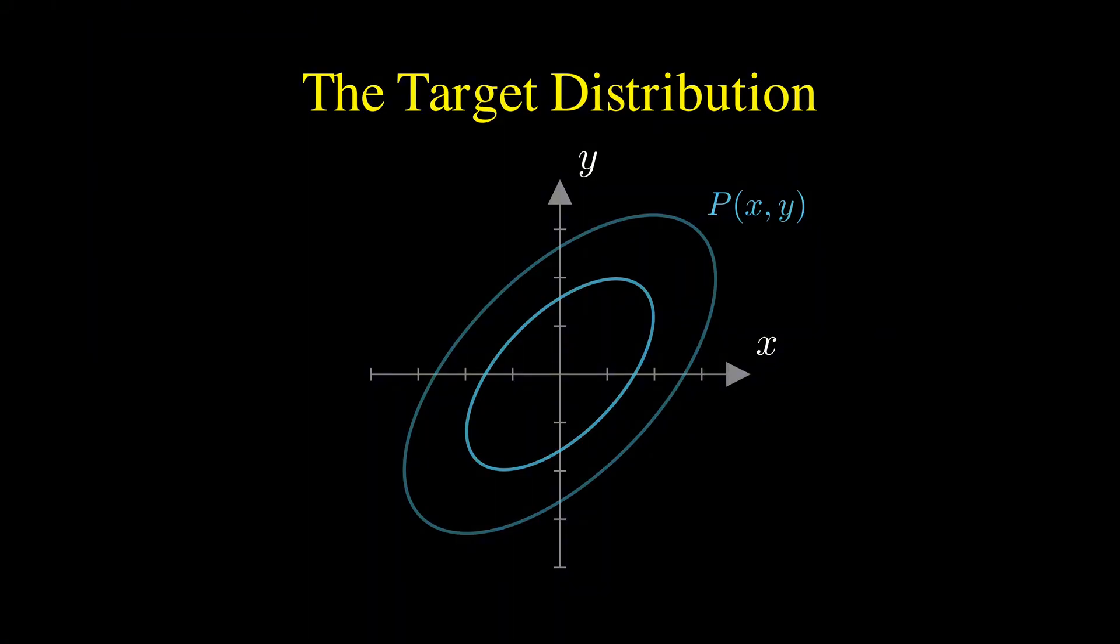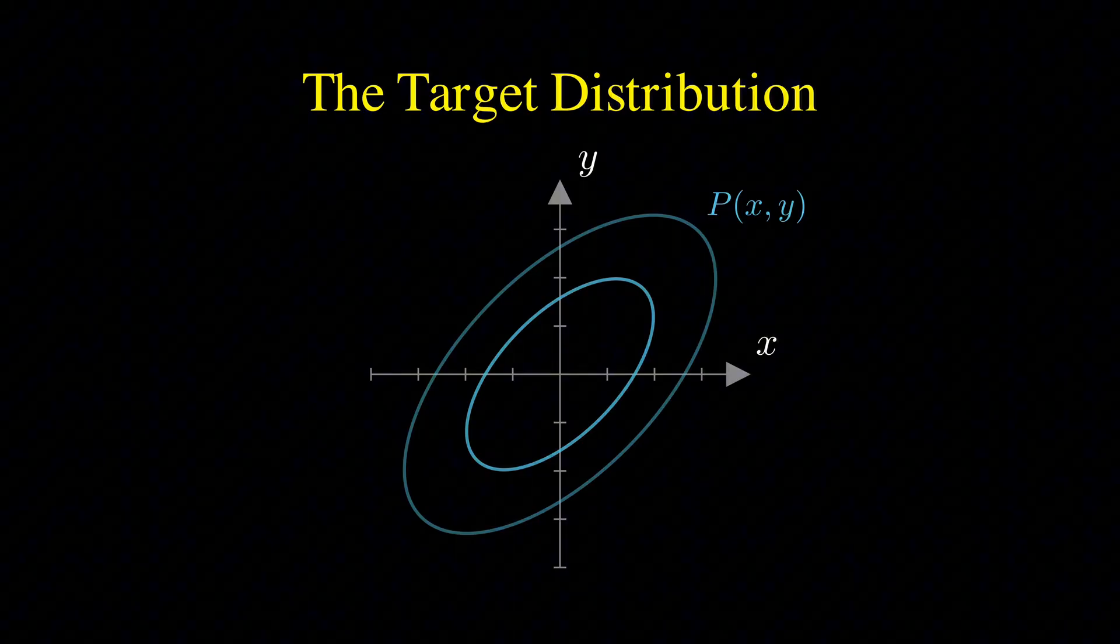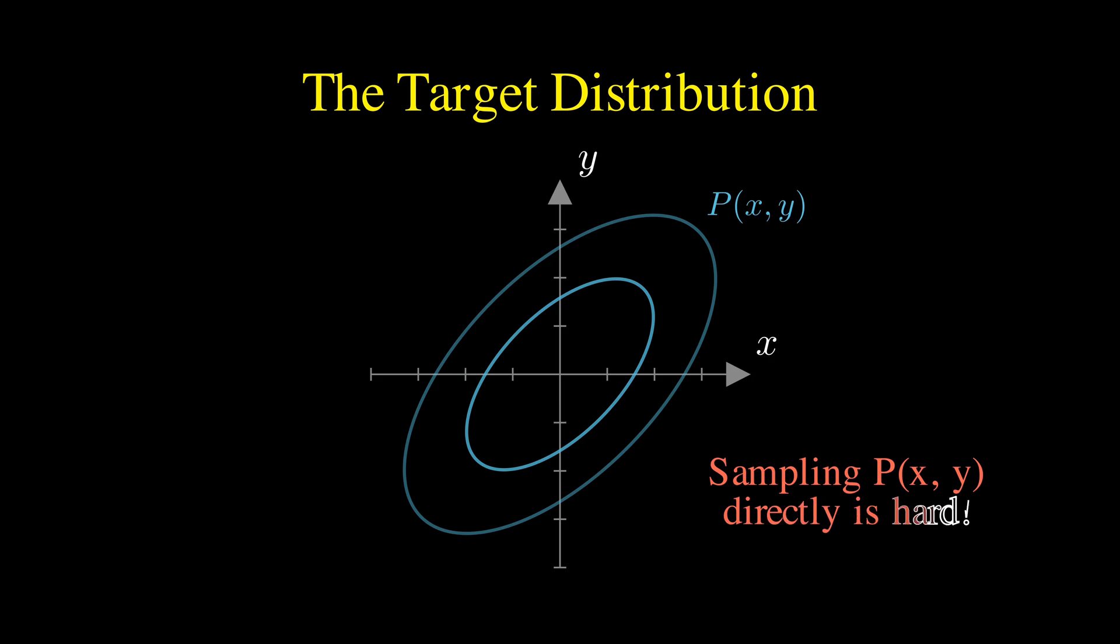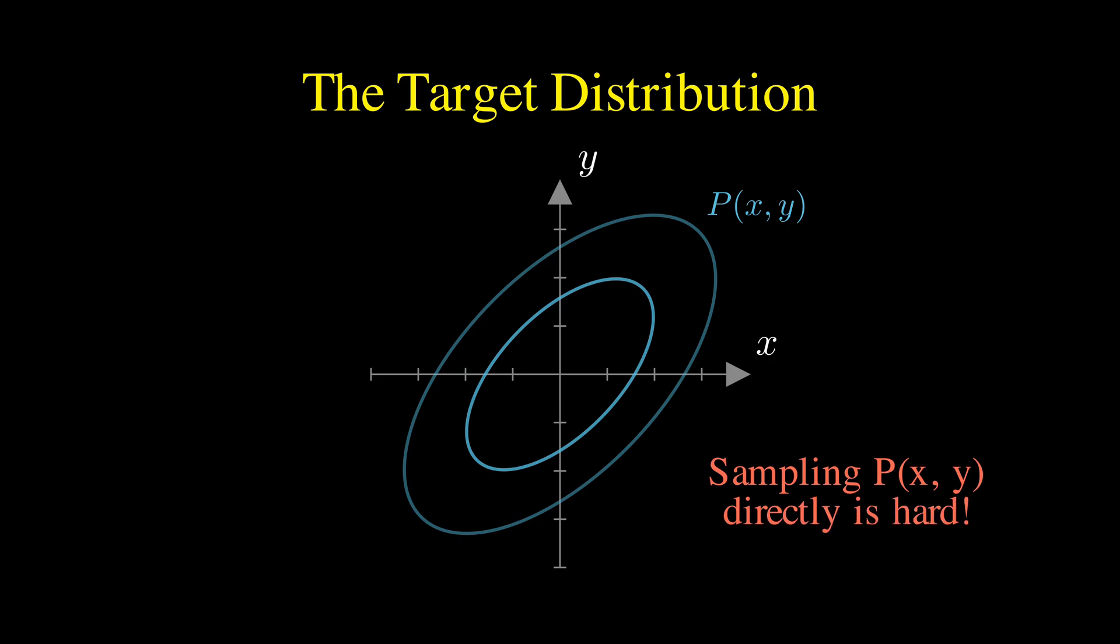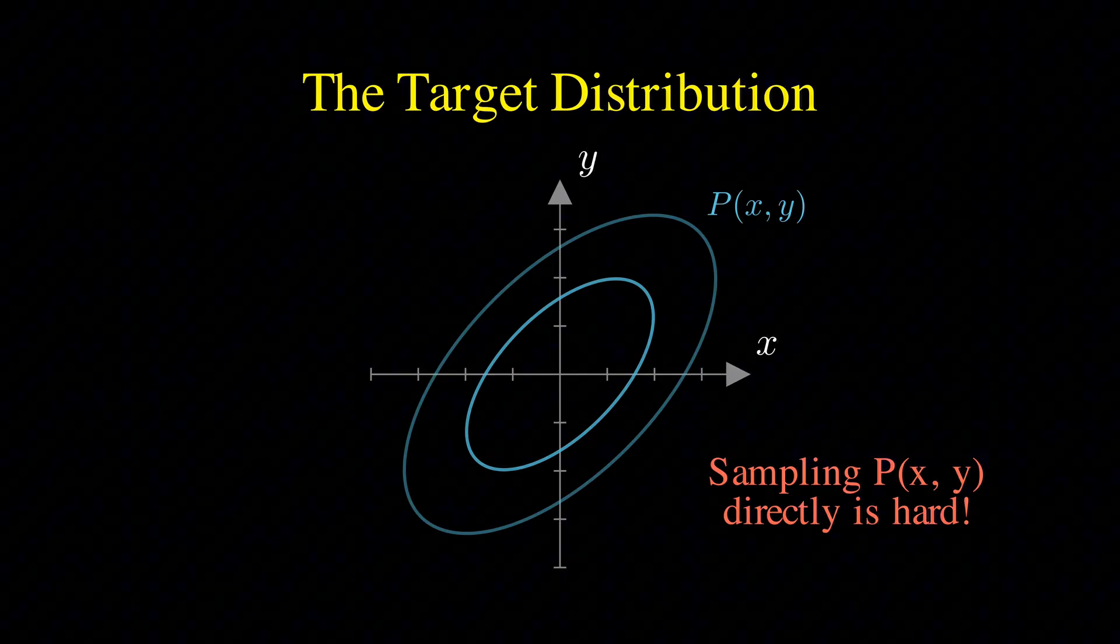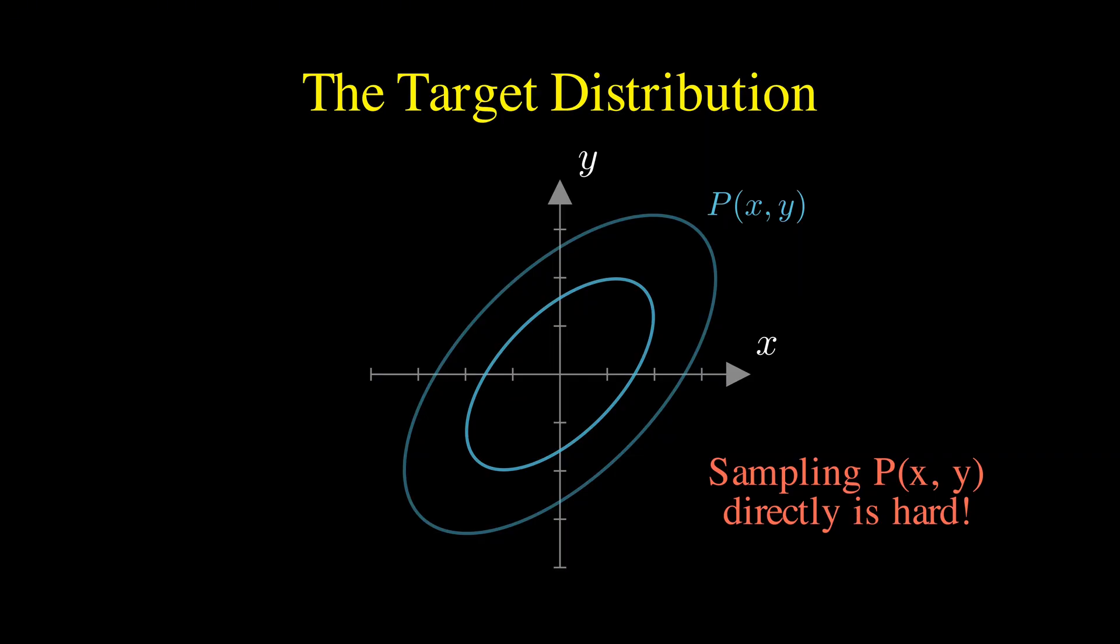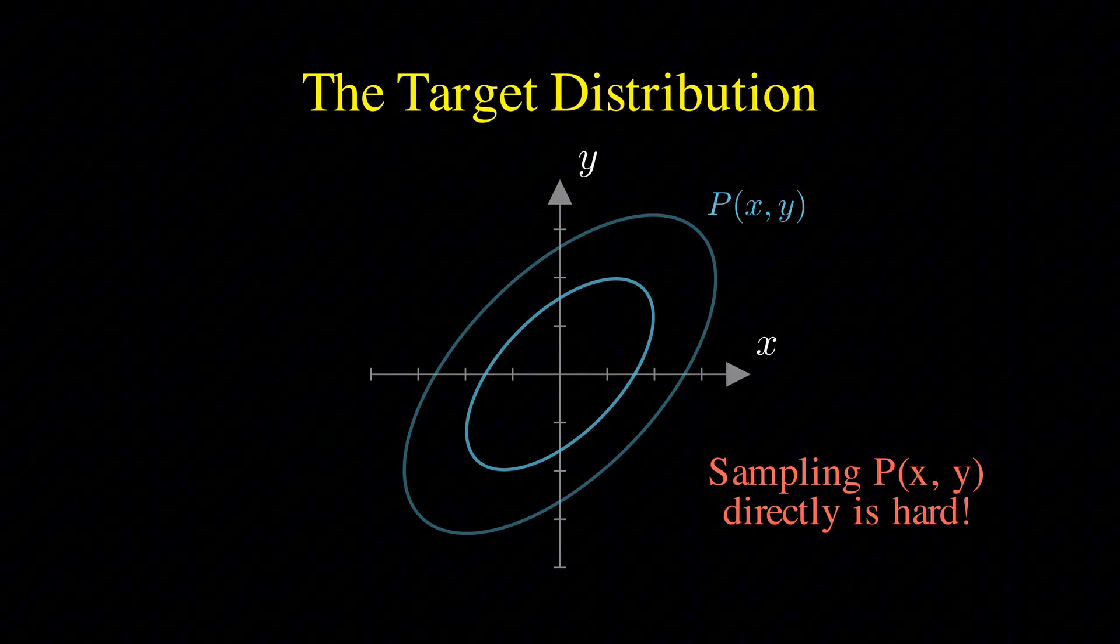Now, typically, sampling directly from this joint distribution, getting an x and y together at the same time, can be mathematically difficult or computationally expensive. We might know the equation for the density, but turning that into random samples isn't straightforward.